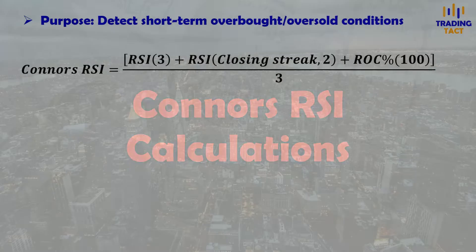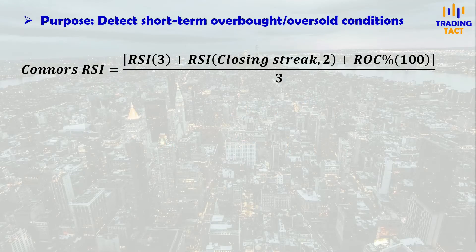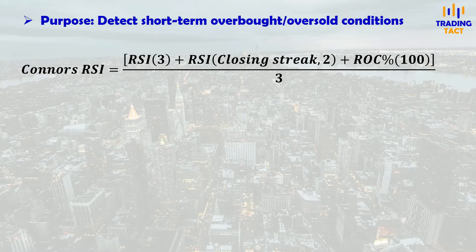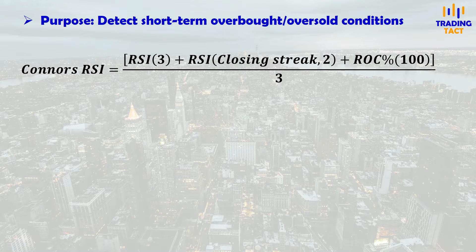The Connors RSI was developed to detect short-term overbought and oversold conditions. The team at Connors Research deemed the regular 14-period RSI to be too slow for this purpose.